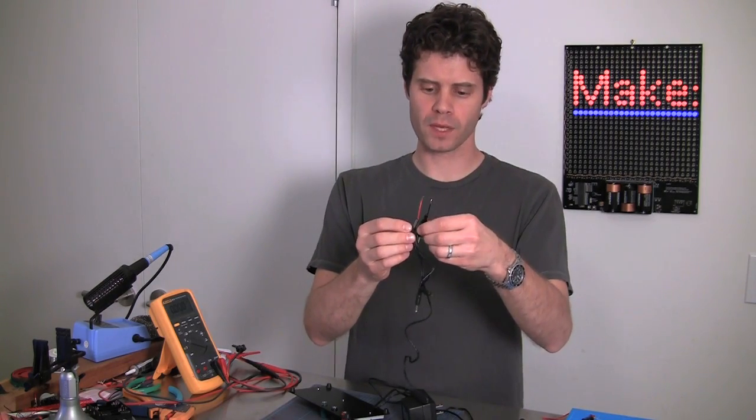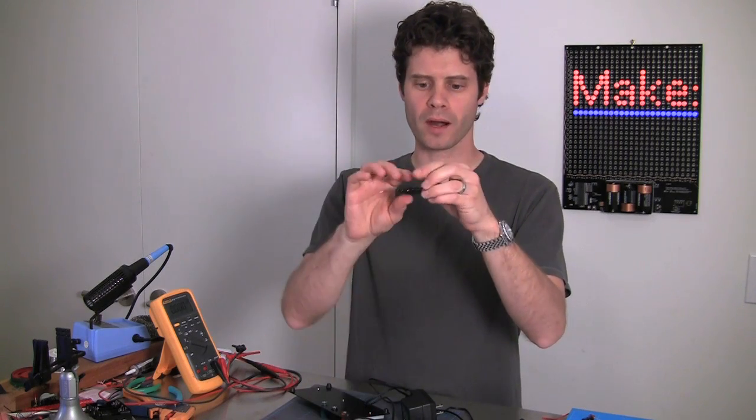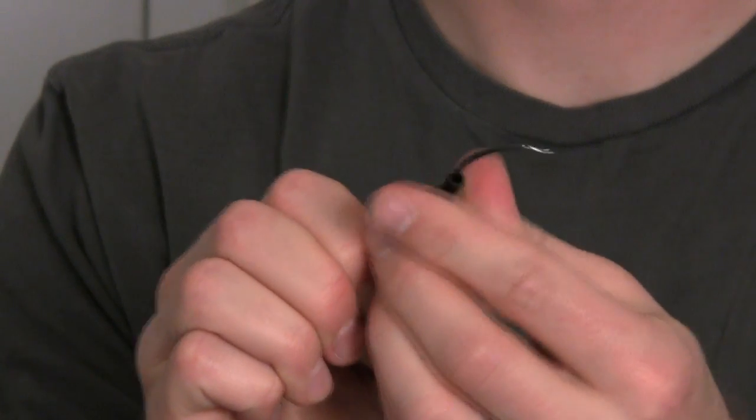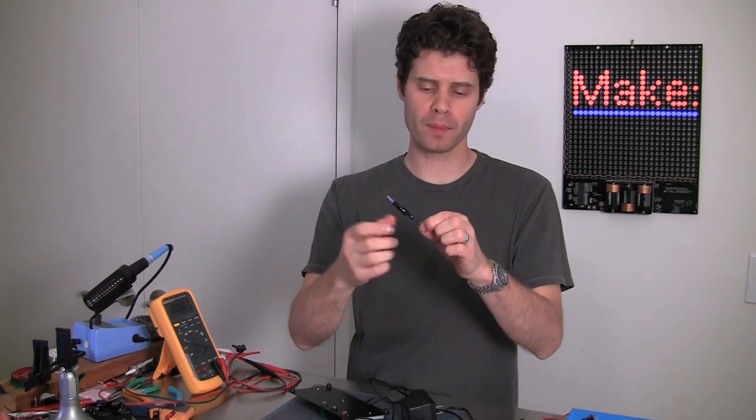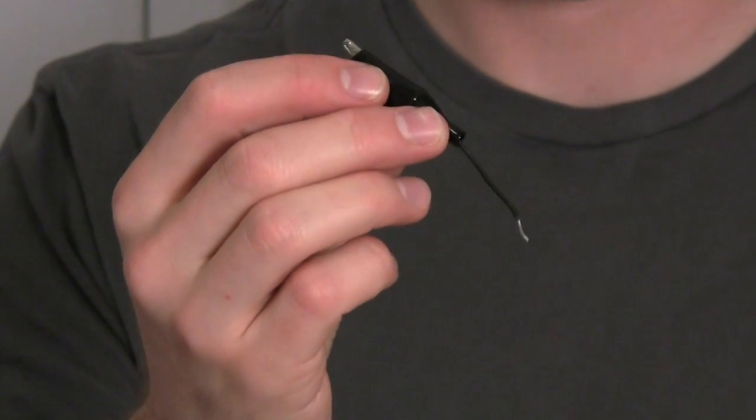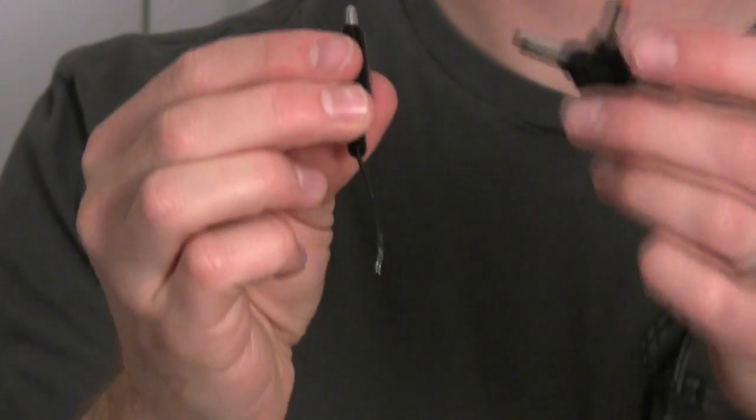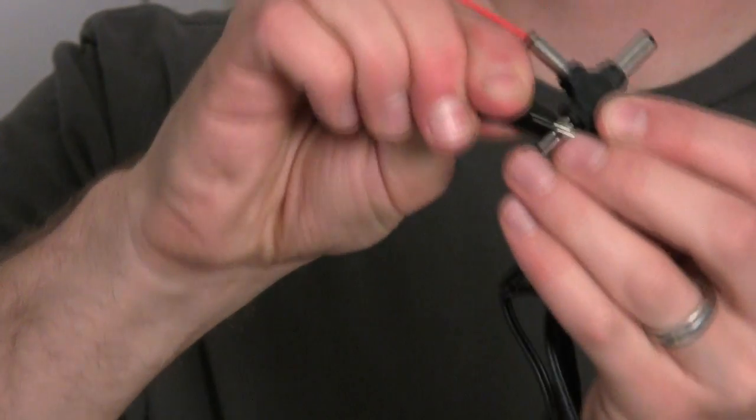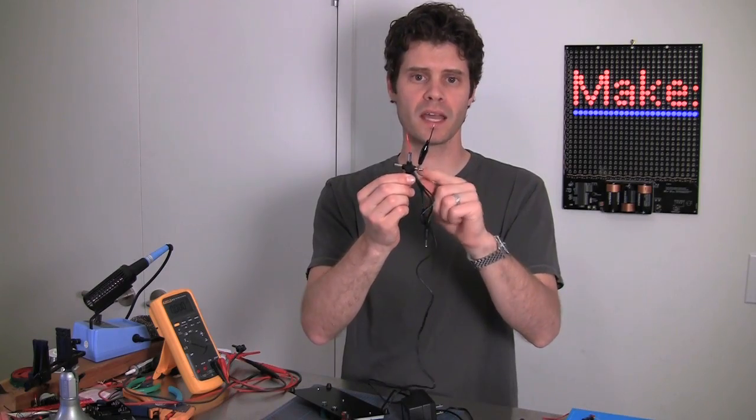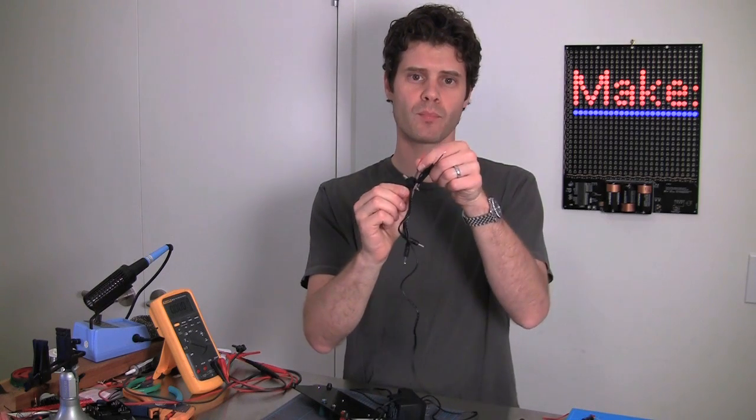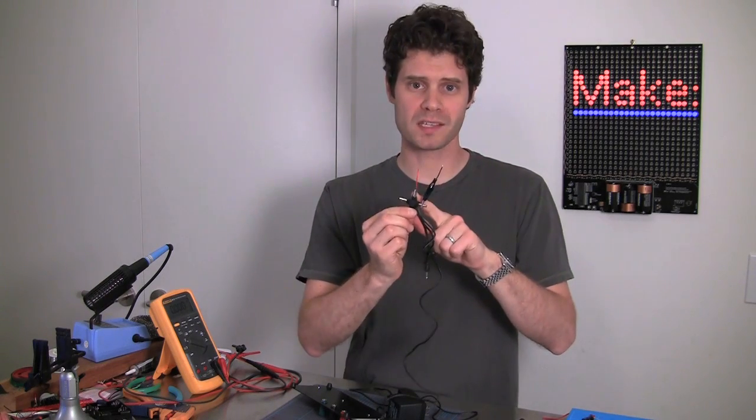And then for the other one, this is where our alligator clip comes into play. If you pull back that insulation, you can attach one of these wires and crimp it down, or you could even solder it in there if you wanted a better connection. And then use that to clip around any of the exterior parts. The ring part of these is going to be negative if we configure it that way on the adapter. And the tip or interior part is going to be positive.